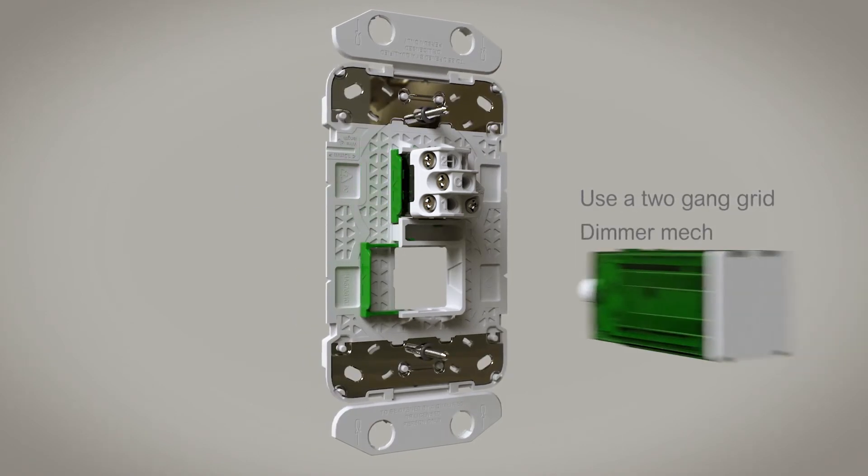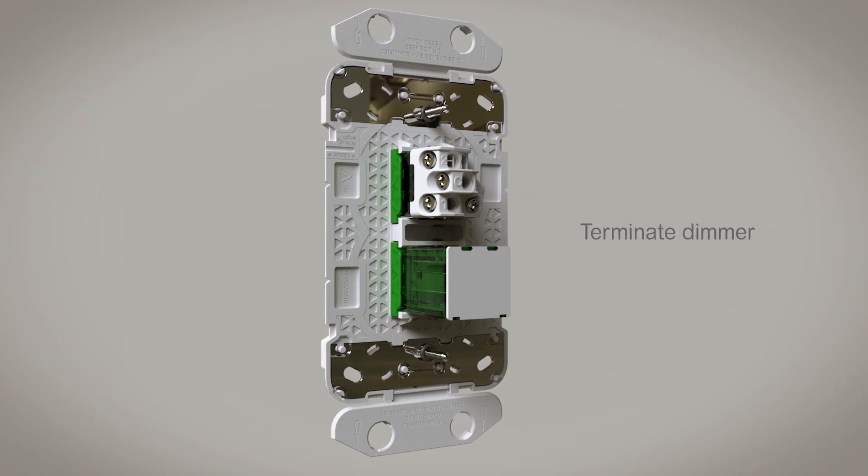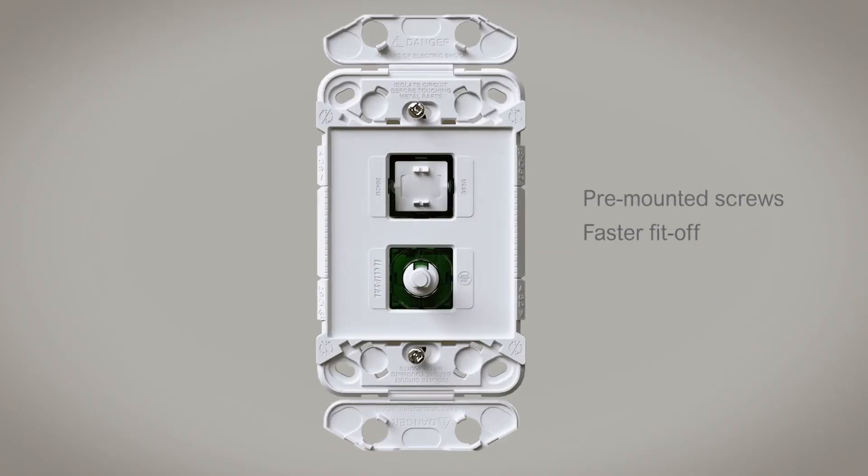Then add a dimmer mech and lock it all in. Simply terminate the dimmer, fit off, and shut the safety flaps.